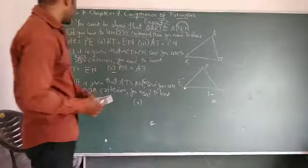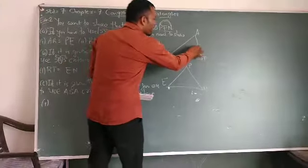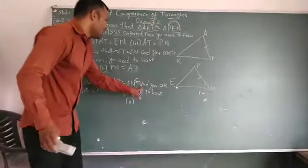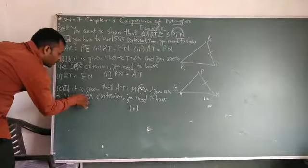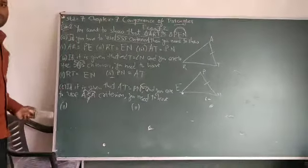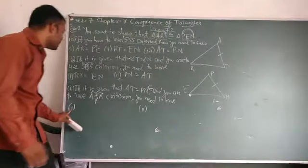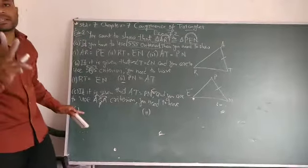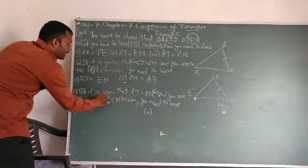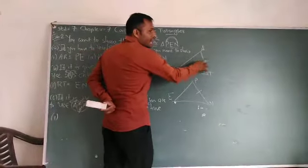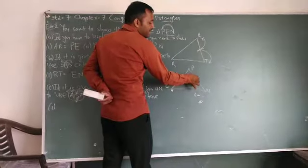Next part, third criteria. If it is given that AT is equal to PN, and you have to use ASA, see here, side is given, we want to find both angles. We want to find both left side and right side angle. You need to have first and second two angles are needed, because ASA has side given and we want to find left angle and also right angle.